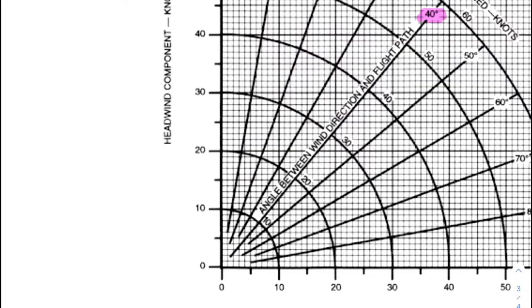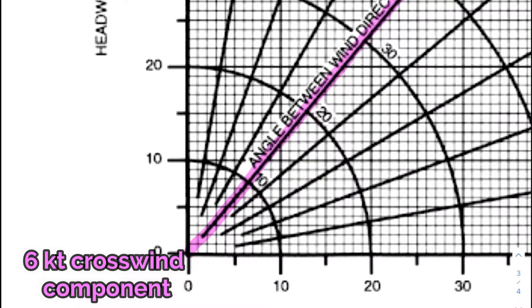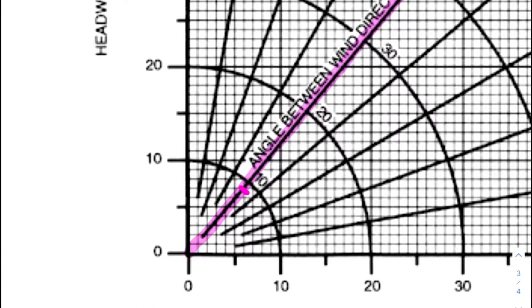With a wind component chart using the curve for 10 knots, then going slightly less for about nine, then following where this crosses the 40 degree line, which was that angle between the wind and the runway, straight down to the crosswind component shows just under six knots. This means that the crosswind is actually within limits and the solo flight can be conducted safely.